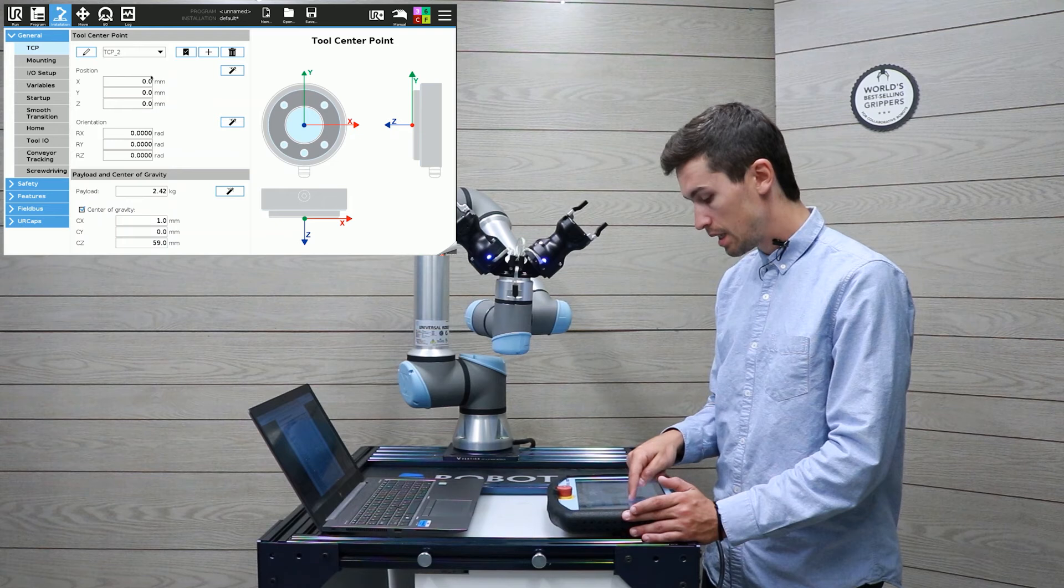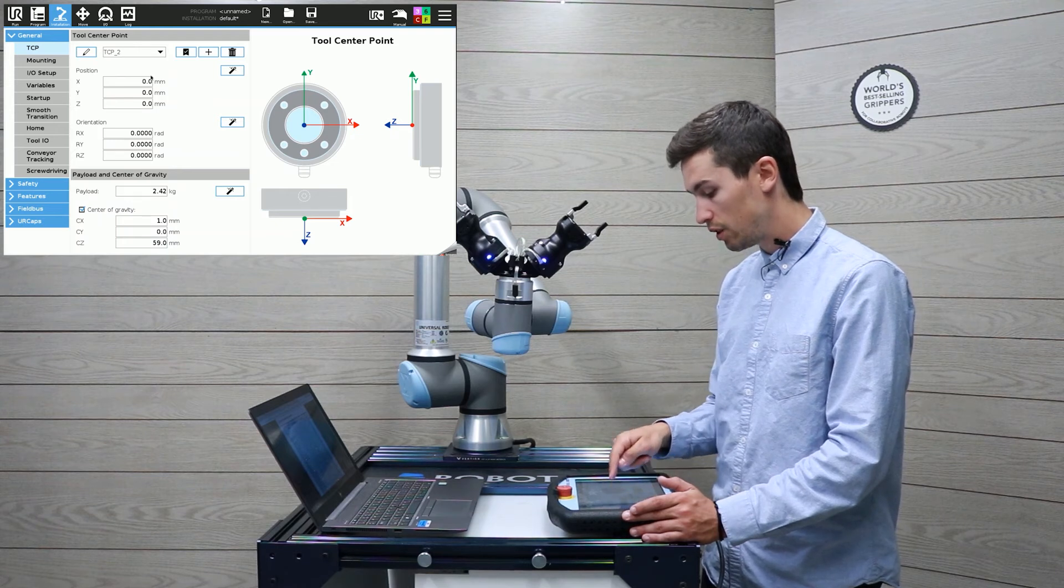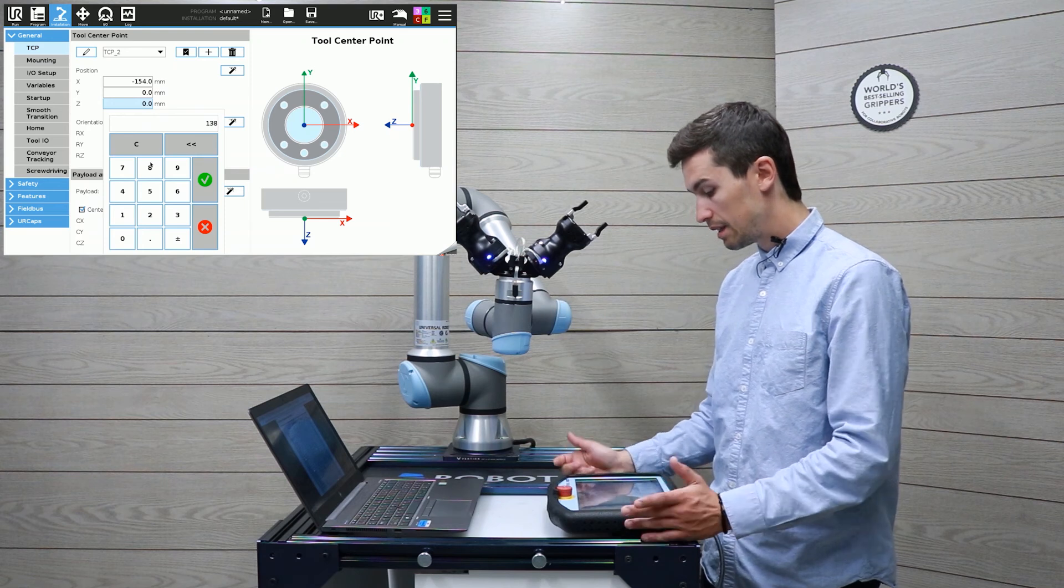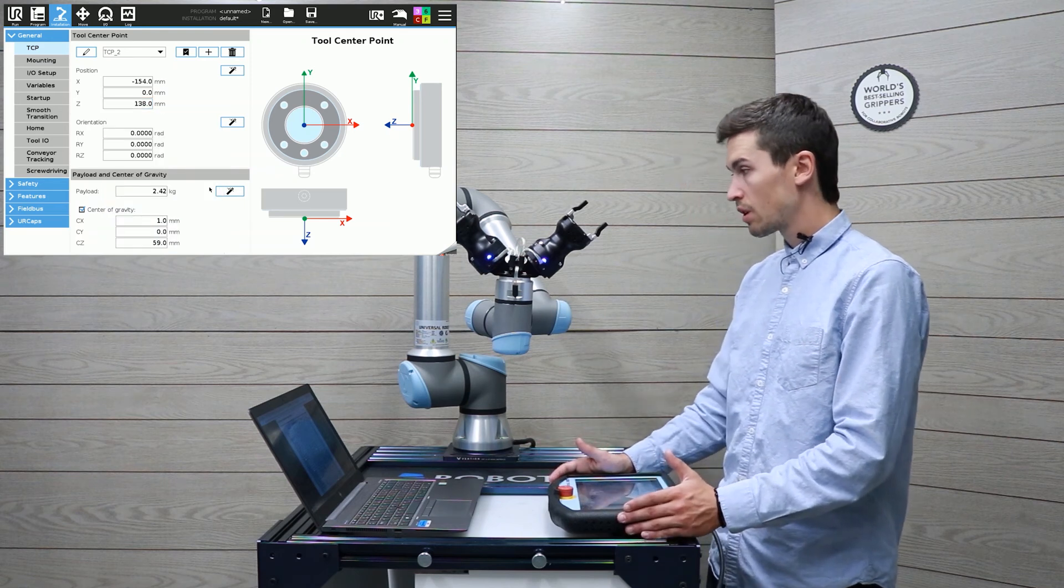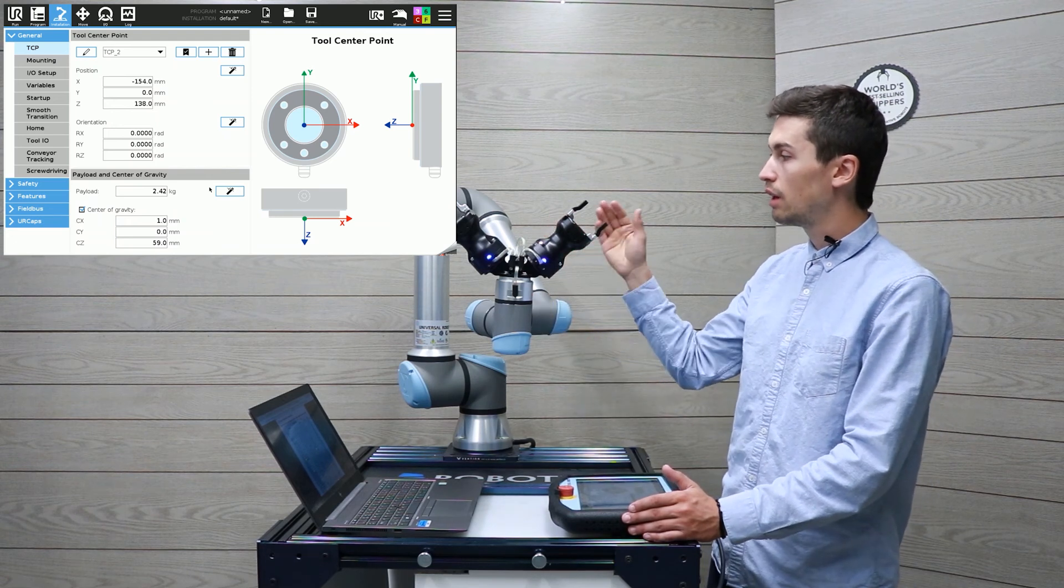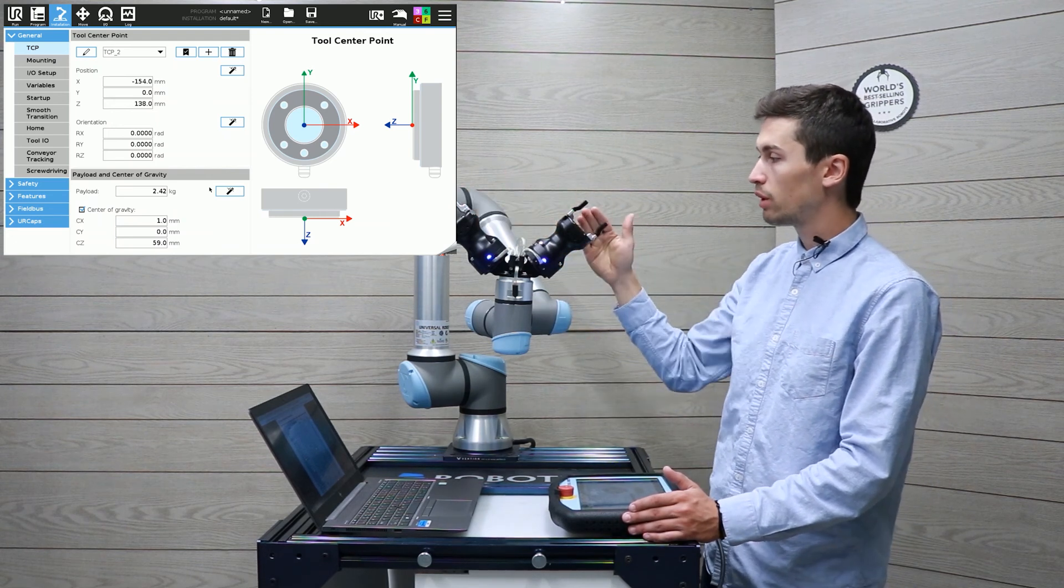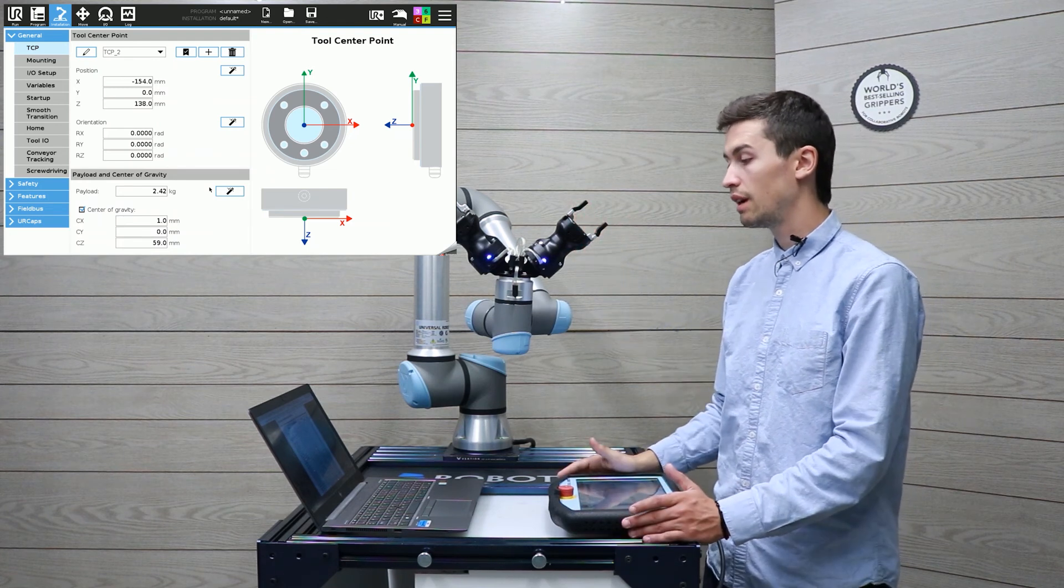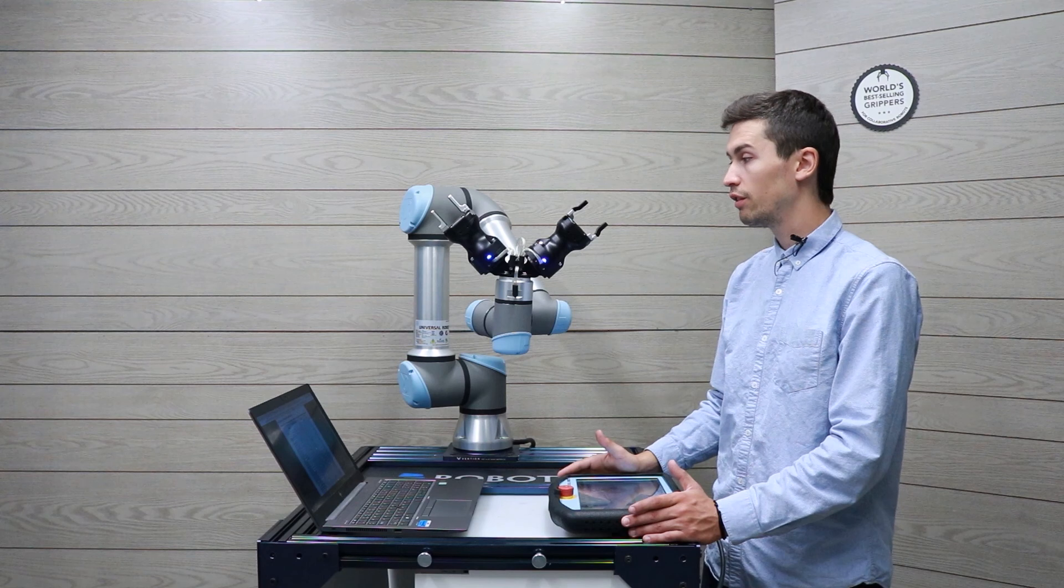So I'm just going to enter those values into the installation tab. And that's it. So we just set the payload of the dual gripper and the TCP of both grippers. So we can now go on with the programming of the dual gripper.